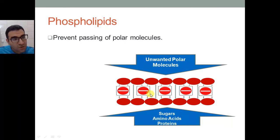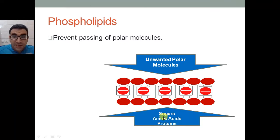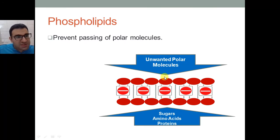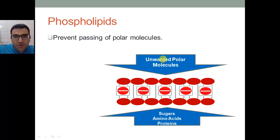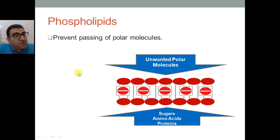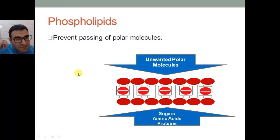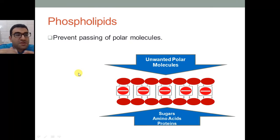This is good for the cell because it keeps those useful substances within it. However, if unwanted polar substances want to enter the cell, they also cannot pass because of the difference in nature between the polar hydrophilic substances and the hydrophobic zone. So phospholipids prevent useful polar substances from moving out and prevent toxic polar substances from moving inside the cell — all because of the difference in hydrophobic and hydrophilic natures.